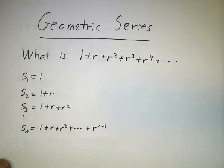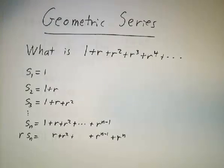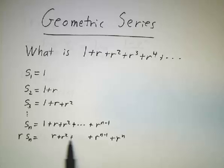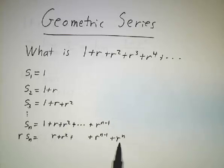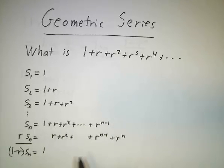I'm going to use a sneaky trick to find a formula for S_n. We multiply both sides of this equation by r, and we see that r times S_n is r plus r squared, plus r to the n — because 1 times r is r, r times r is r squared, r squared times r is r cubed, and r to the n minus 1 times r is r to the n. Then we take a difference: 1 minus r times S_n equals 1, and all the terms in the middle cancel.